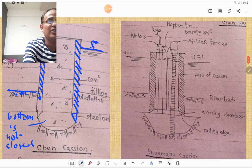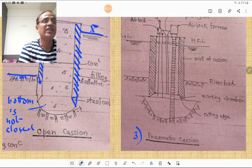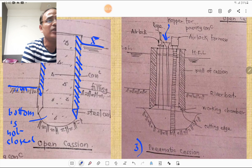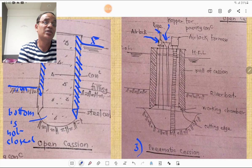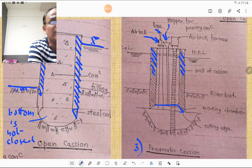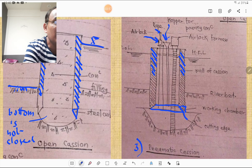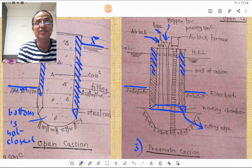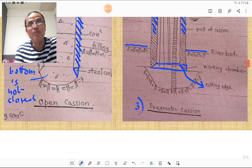Then this is the third figure. Third figure shows the pneumatic caisson. Pneumatic caisson consists of the airlock foreman, the hopper used for pouring the concrete, the airlock, the rope which is used for pneumatic caisson. These are the walls of caisson, this is one wall and another wall of caisson. Below here is the working chamber and this is the cutting edge of the curve. This is the river bed and such a type of caisson is called as a pneumatic caisson.